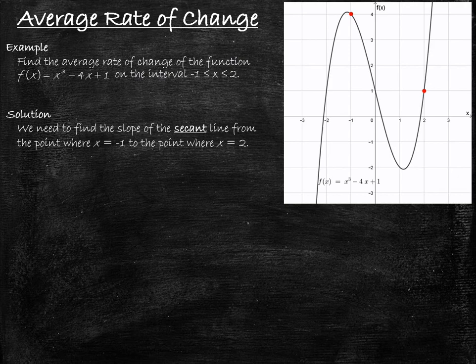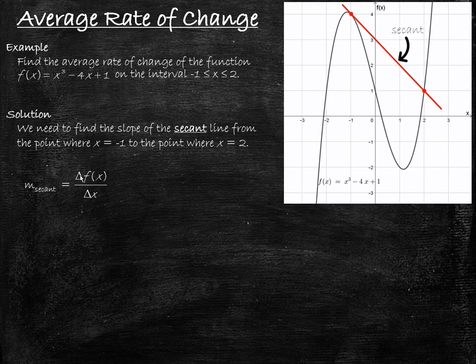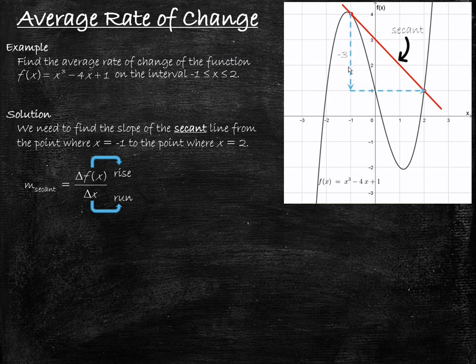So we need to find the slope of the secant line that goes through these two points. To find the slope of this line we use our regular method for finding slope. The secant slope equals Δf(x) over Δx — that is the change in the f(x) value, or the change in the y value, over the change in the x value. This is simply the rise divided by the run. From the graph we have a rise of negative 3 and a run of 3, so negative 3 divided by 3 gives us a slope of negative 1.